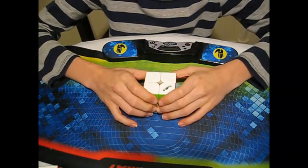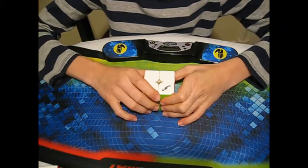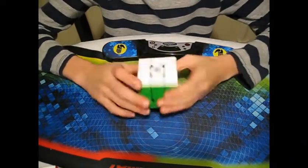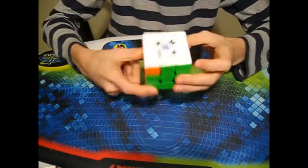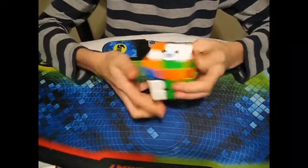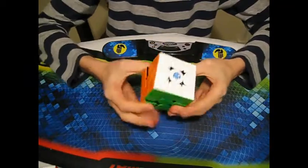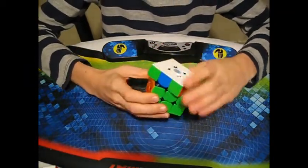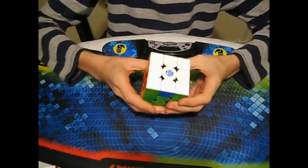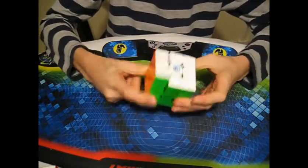These are to be Sub-4 and to learn half of CLL. Now for 3x3, I have the GAN 356X, and I think it's very stable. I have the strong magnets and the yellow GES.